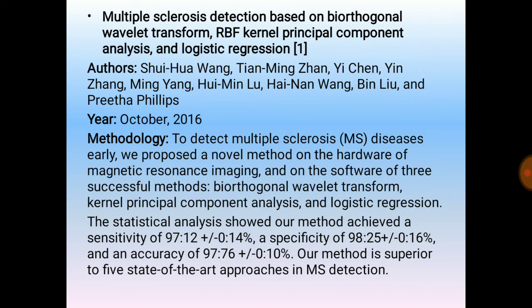The fifth and final literature survey paper is on multiple sclerosis detection based on biorthogonal wavelet transform, RBF kernel principal component analysis and logistic regression, published in IEEE in October 2016. To detect multiple sclerosis (MS) diseases early, a novel method is proposed on the hardware of magnetic resonance imaging and software of three combined methods. Statistical analysis showed sensitivity of 97.12 ± 0.14%, specificity of 98.25 ± 0.16%, and accuracy of 97 ± 0.10%.